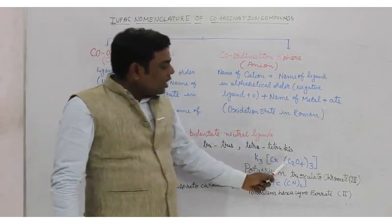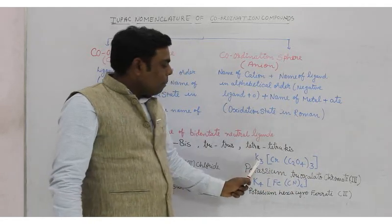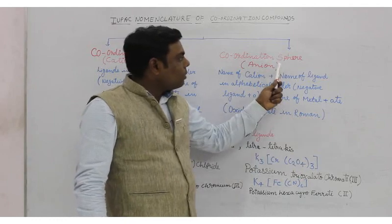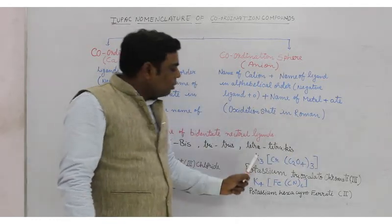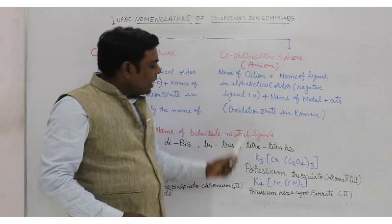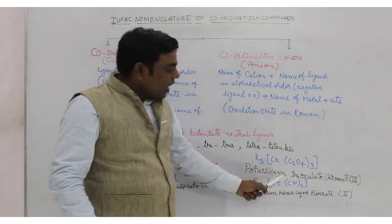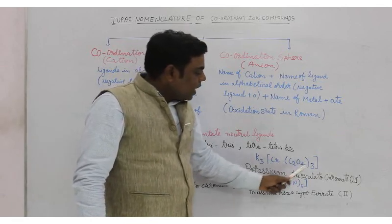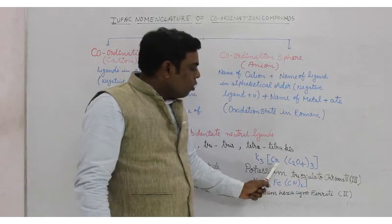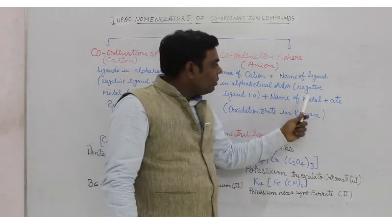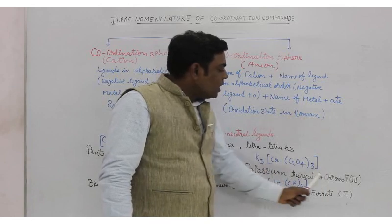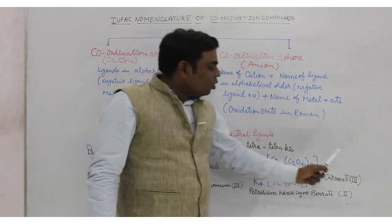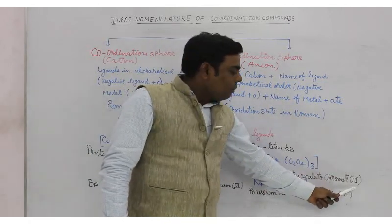For example, K3[Cr(C2O4)3]: here K+ is the cation, so the coordination sphere is the anion. We write the cation first — potassium. The ligand is oxalate and there are 3 of them, so we write trioxalato. For chromium, since the complex is anionic, we add '-ate' and write chromate. The oxidation state is +3, so the full name is potassium trioxalatochromate(III).